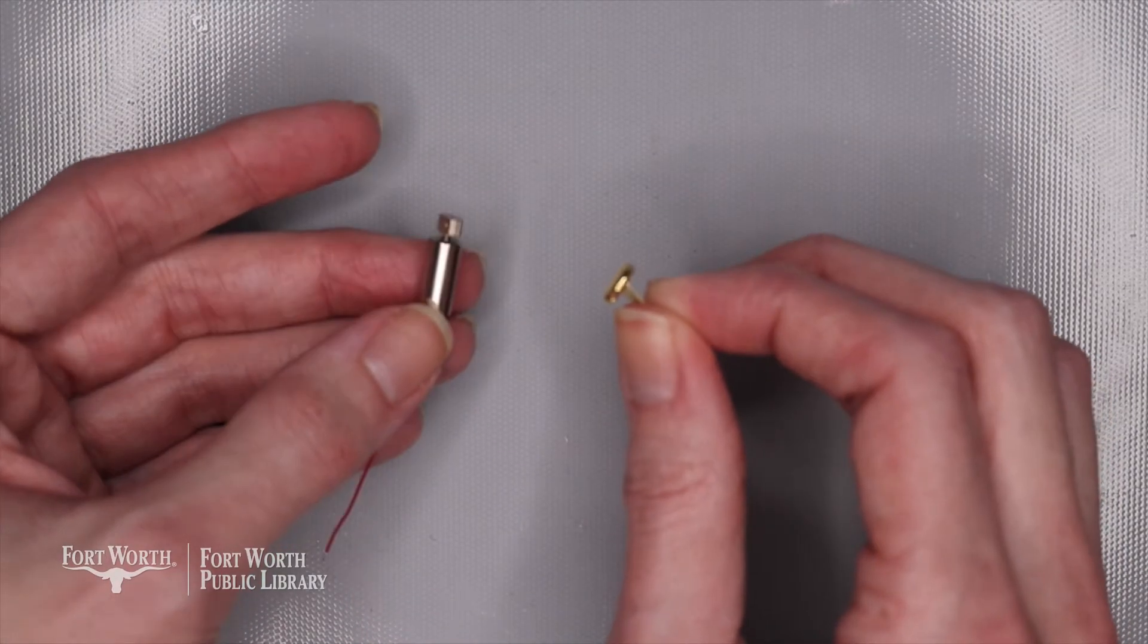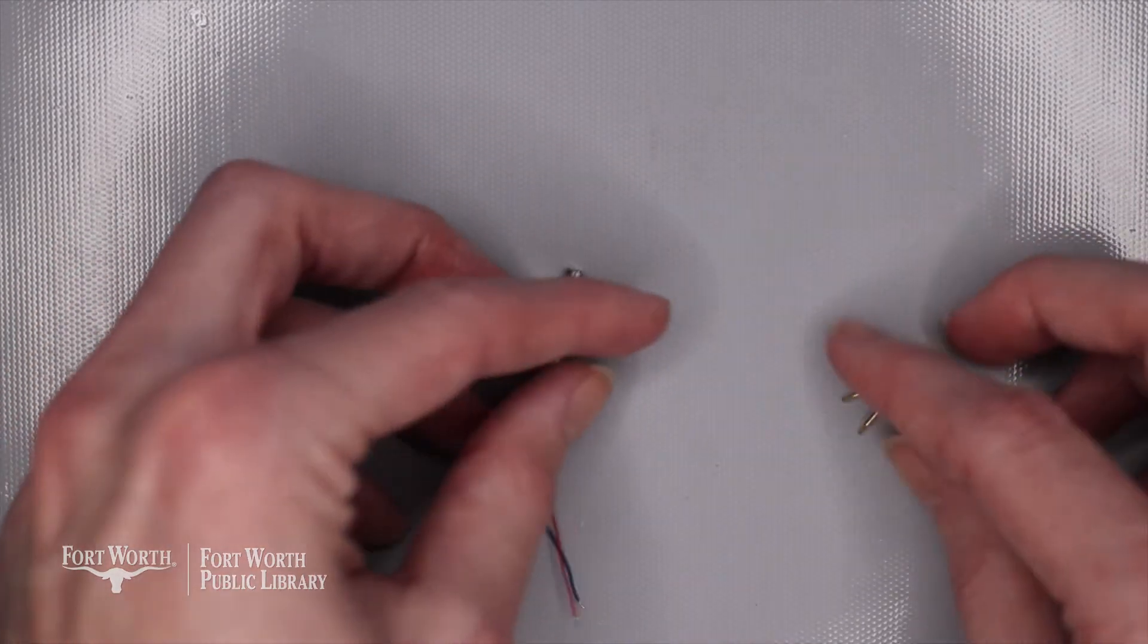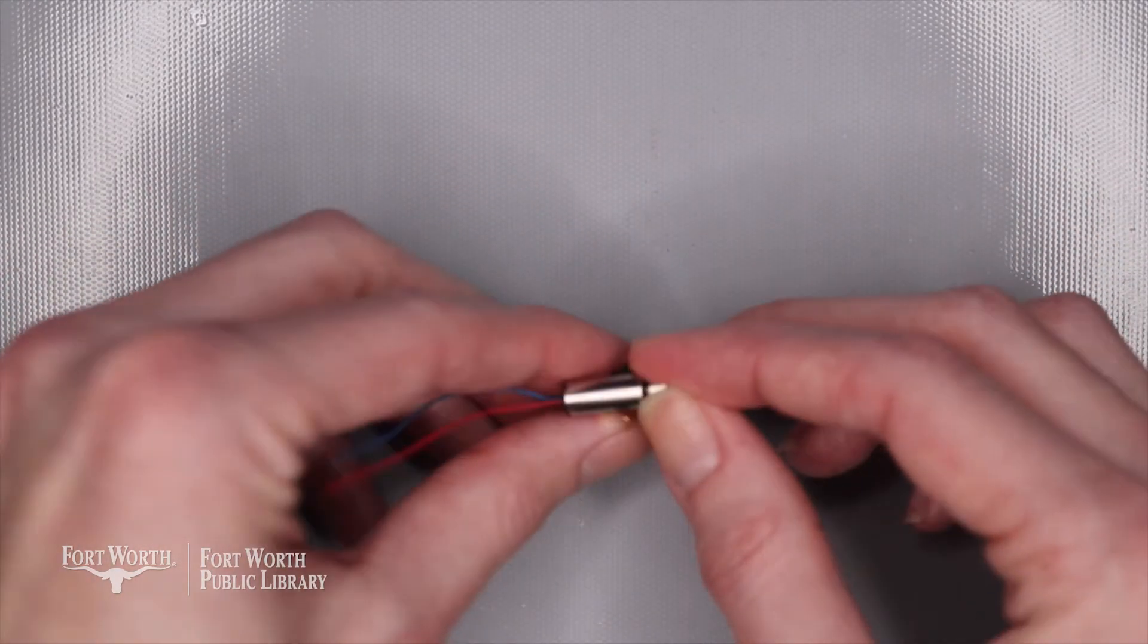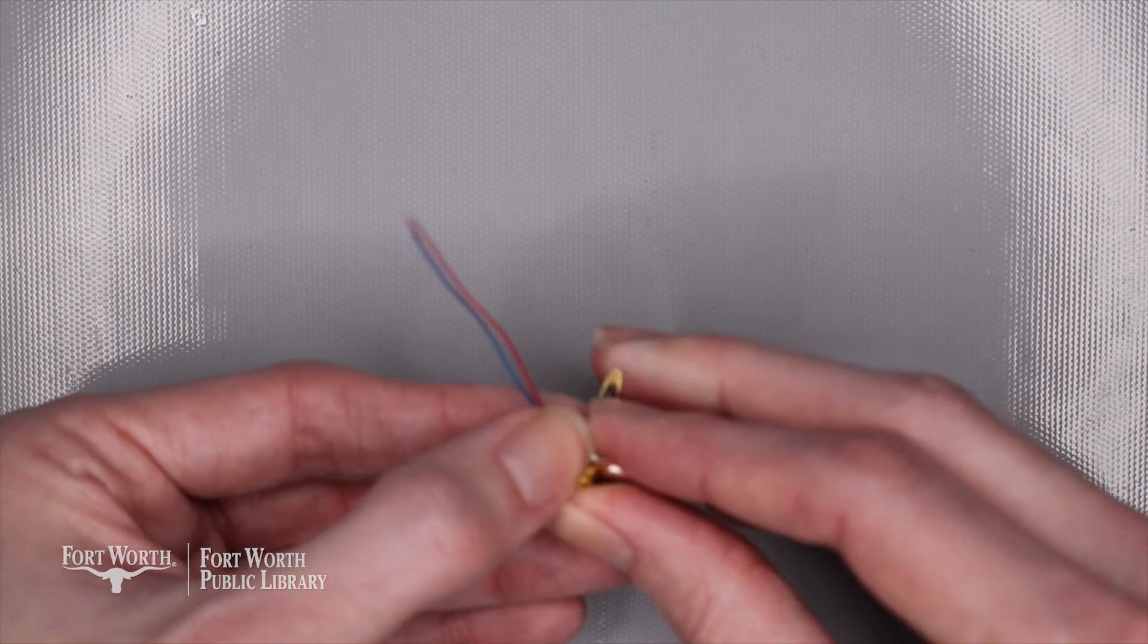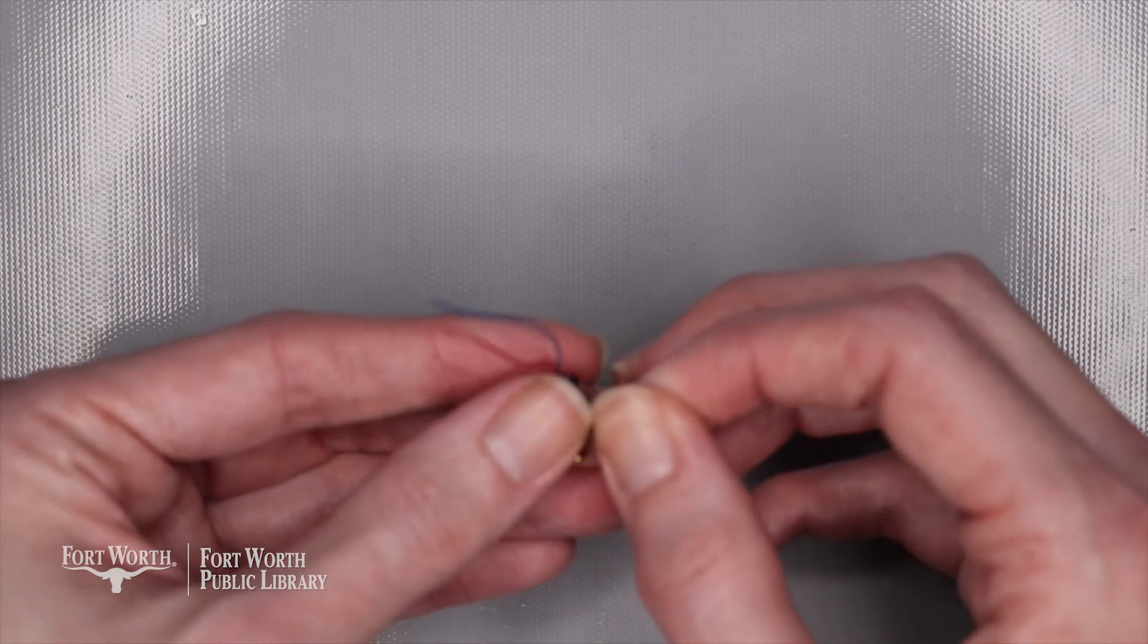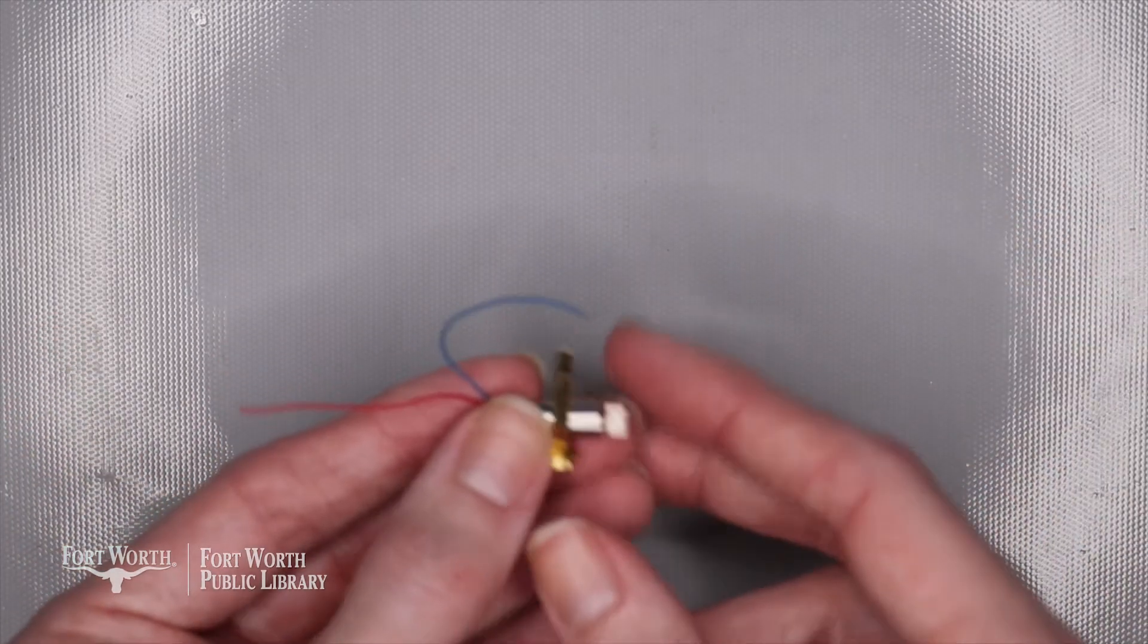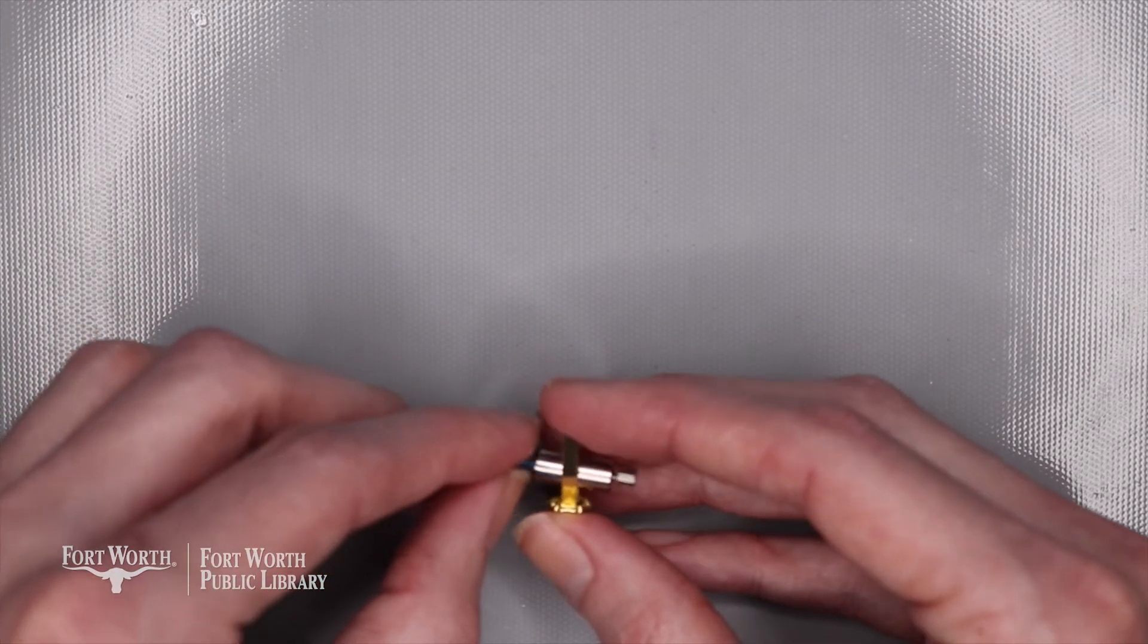Alright, I've set the bottle cap off to the side. I have my vibrating motor and my brad. What I'm going to do is open up the brad enough that I can fit the vibrating motor inside of it just like this. And it's going to wrap around. You're going to wrap the tongs around the vibrating motor.